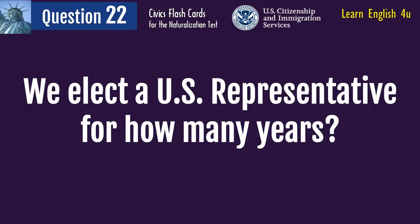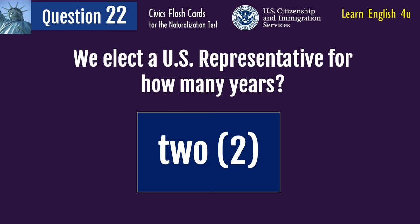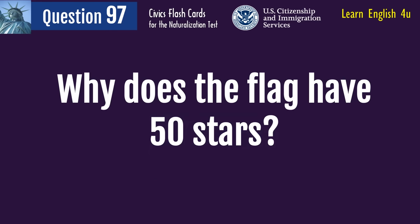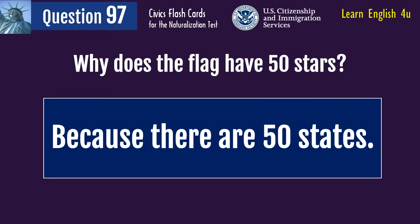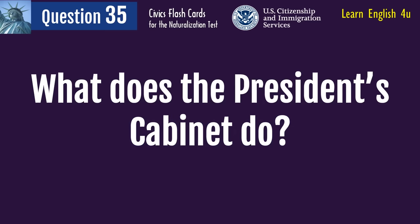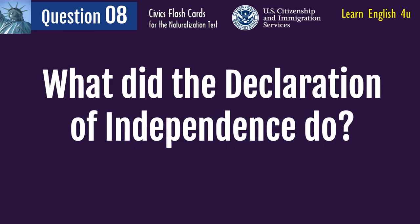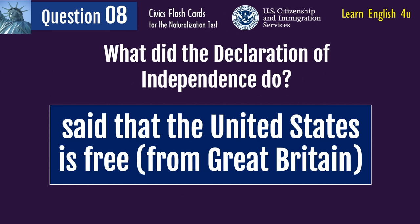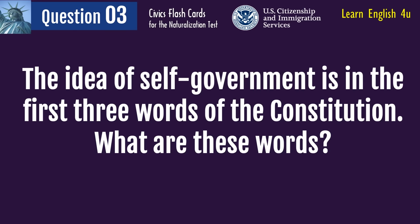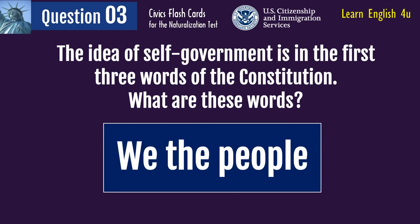We elect a U.S. representative for how many years? Two. Why does the flag have 50 stars? Because there are 50 states. What does the president's cabinet do? Advises the president. What did the Declaration of Independence do? Said that the United States is free from Great Britain. The idea of self-government is in the first three words of the Constitution. What are these words? We the people.